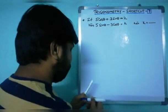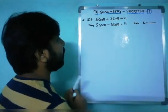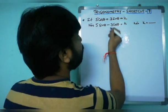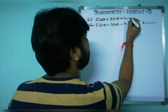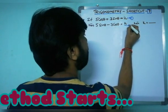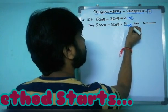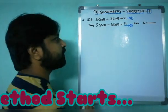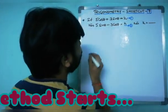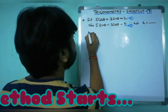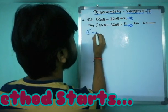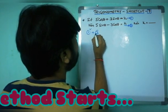There are two equations here. Let the first equation be called equation 1 and the second equation be called equation 2. Now, what you are going to do is apply 1² + 2², that is, square equation 1 and add it to the square of equation 2.